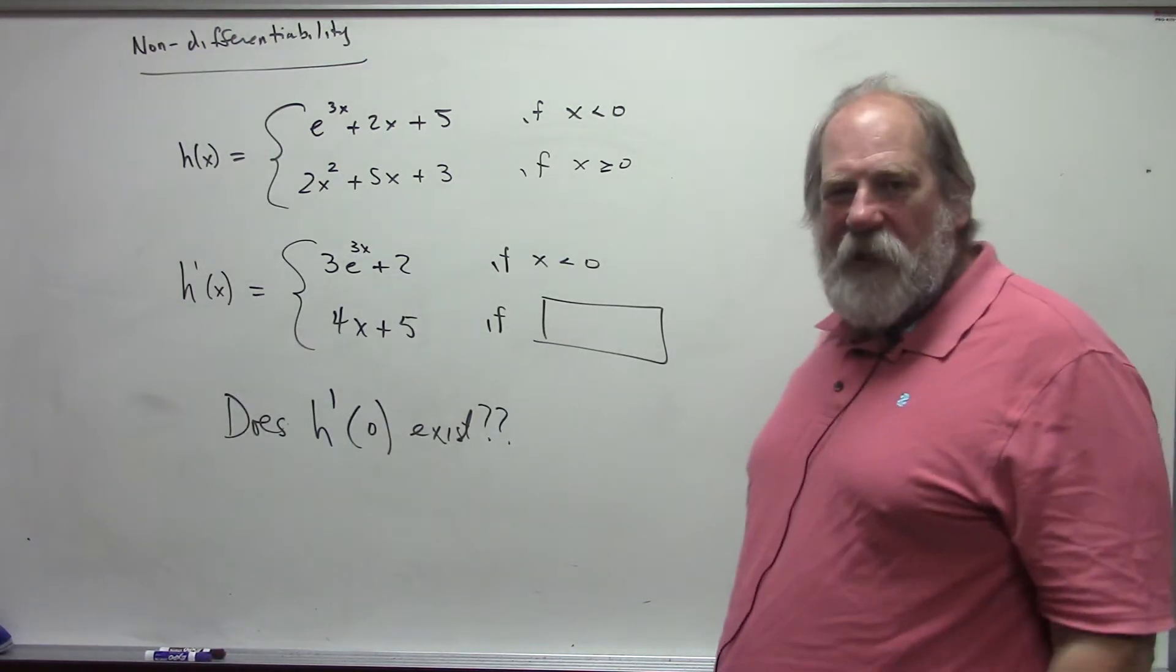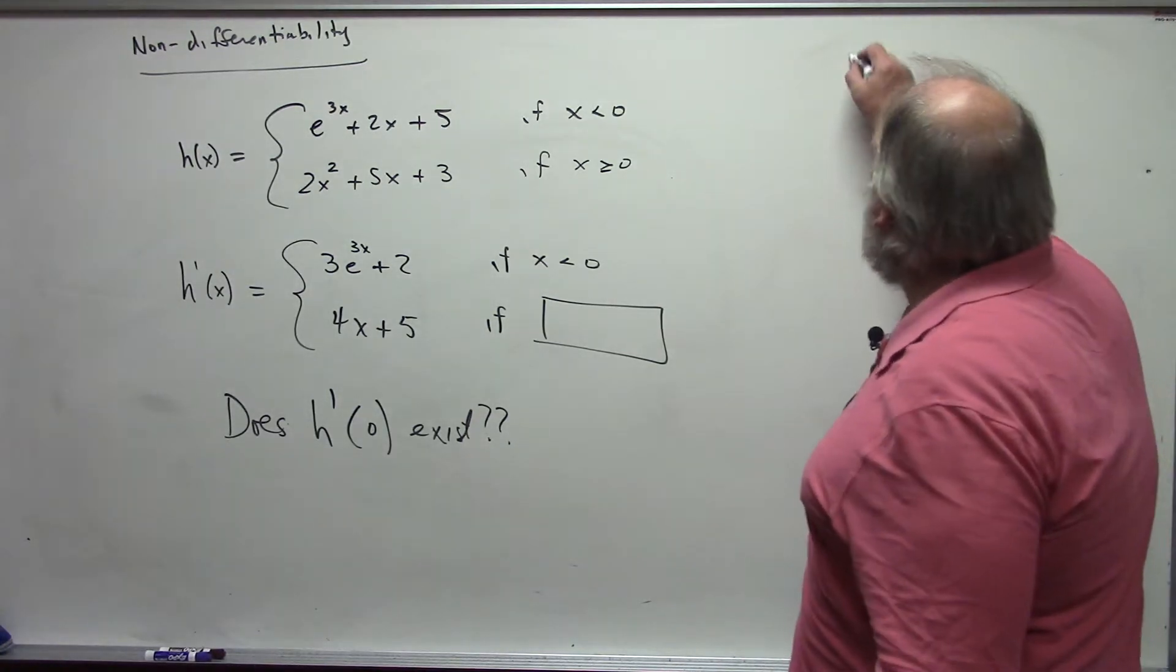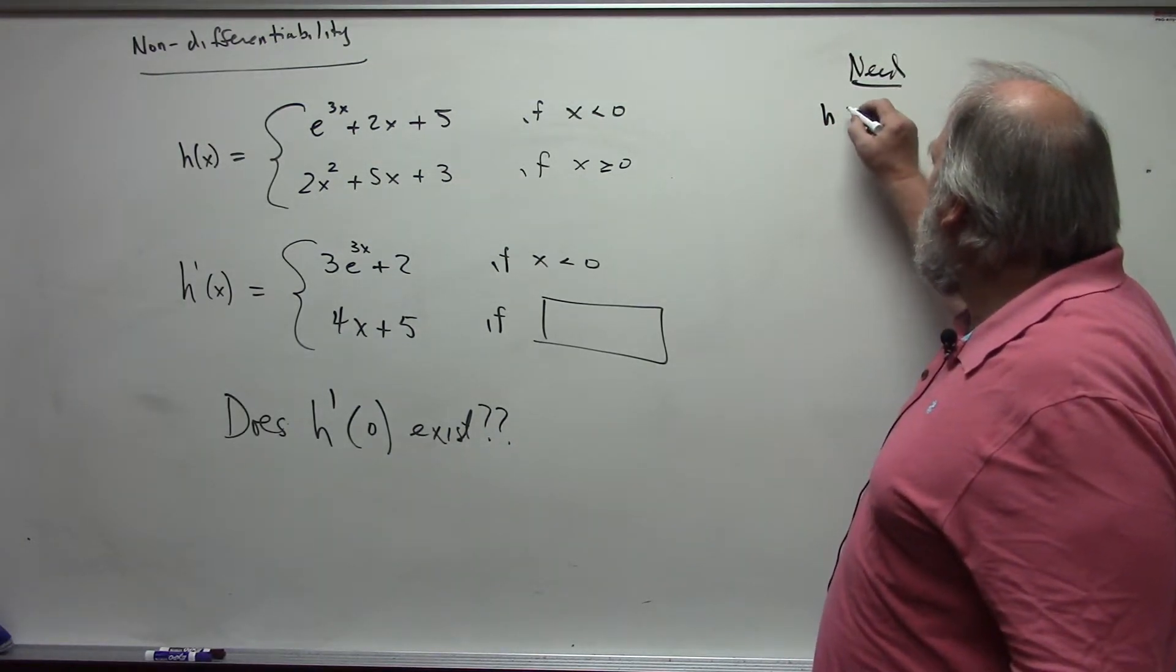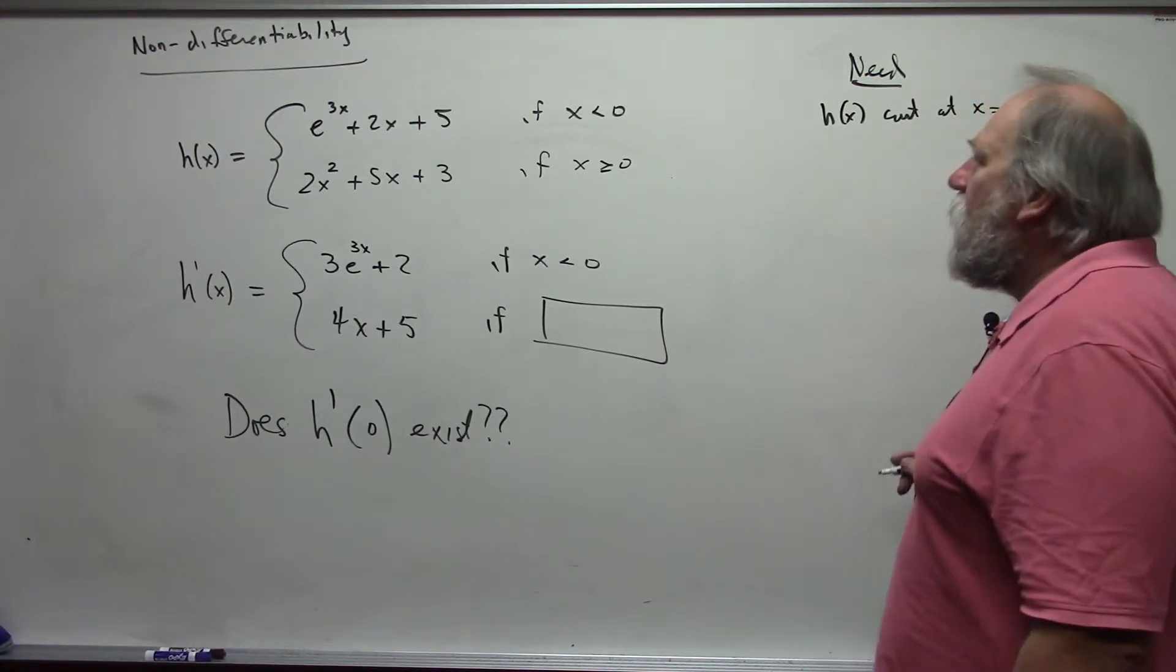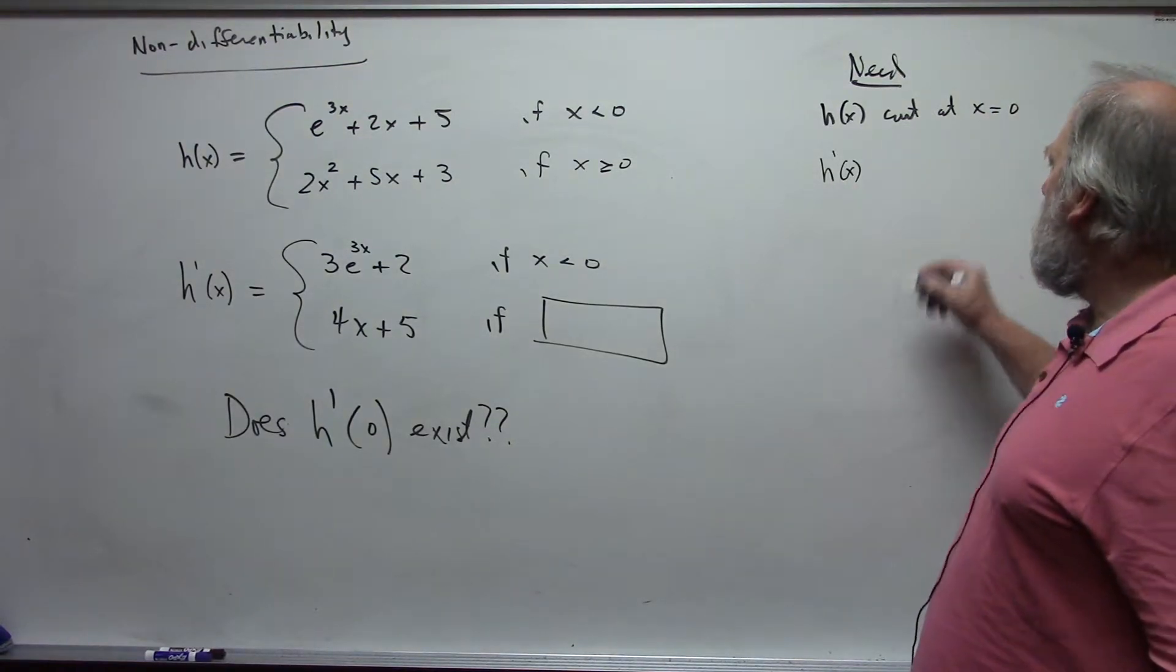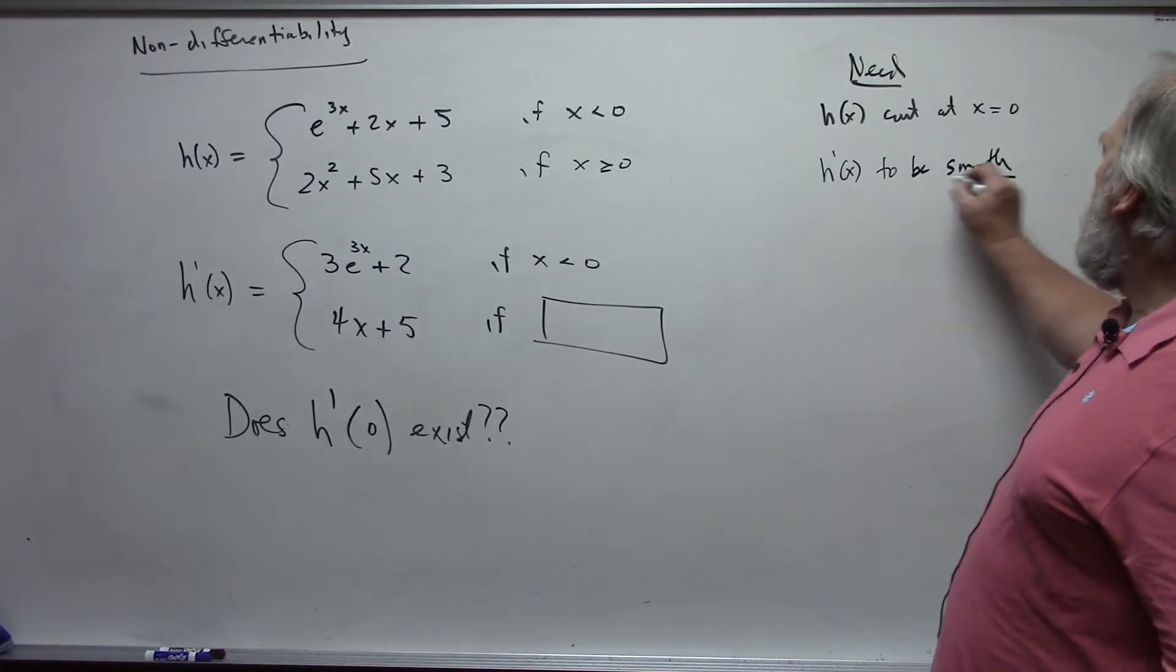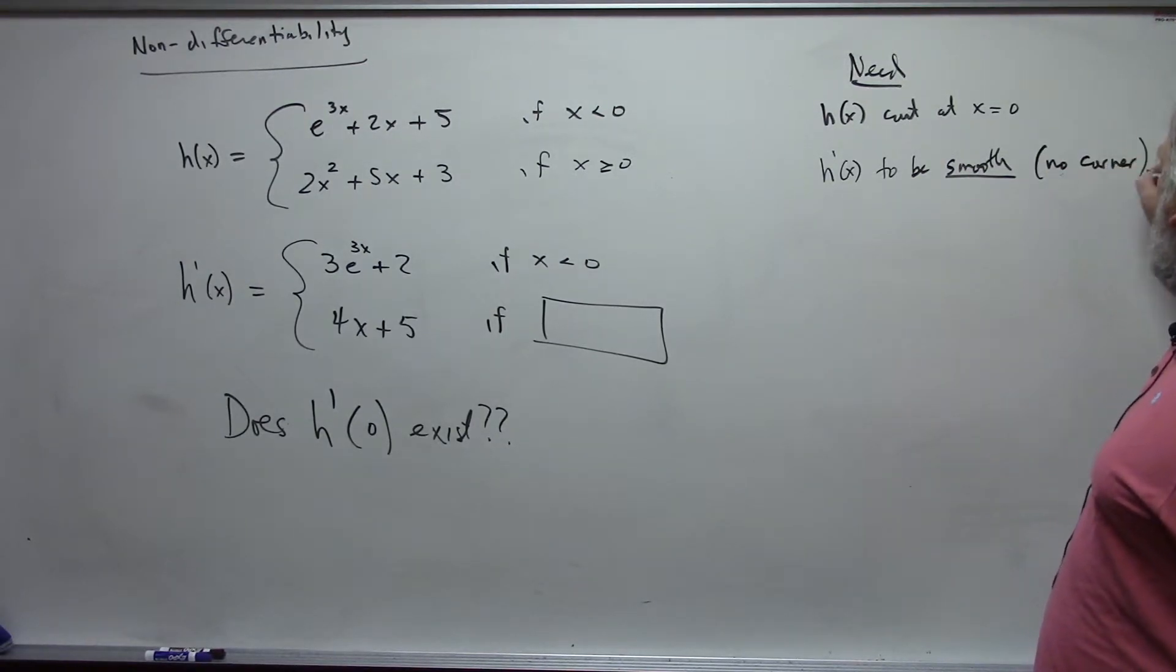But we still have the other two situations that have to match up. So we need the function to be continuous, and I need h prime of x to be smooth. Smooth means that there's no corner point.